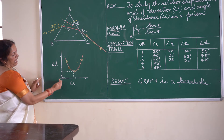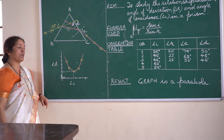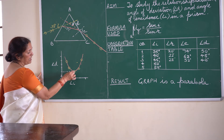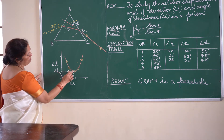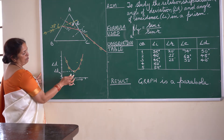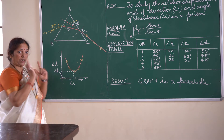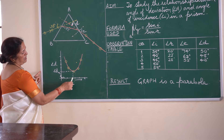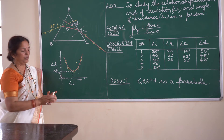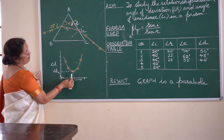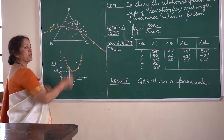While drawing your conclusion, describe how the variation takes place: as we increase the angle of incidence, the angle of deviation keeps on decreasing until it reaches a minimum value — the angle of minimum deviation. Beyond this minimum value, if we further increase the angle of incidence, the angle of deviation keeps on increasing.